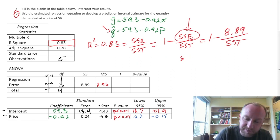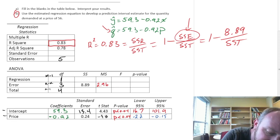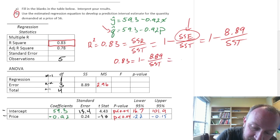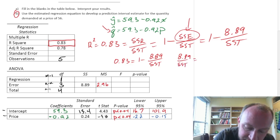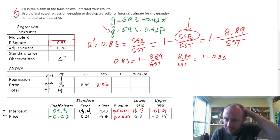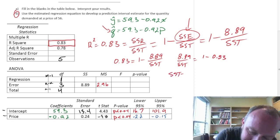So I have 0.83 is equal to 1 minus 8.89 over SST. So let's just rearrange this a little bit. 8.89 over SST is equal to 1 minus 0.83. I'm losing it man.